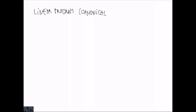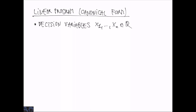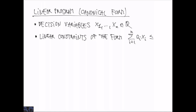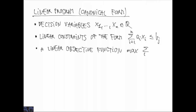A linear program in its canonical form looks as follows. There are a number of decision variables, x1 through xn, which are real-valued. We have a set of linear constraints of the form: a linear combination of the xi should be bounded from above by a value bj, which is a real number. And finally there is a linear objective function, which is to maximize a linear combination of the xi.